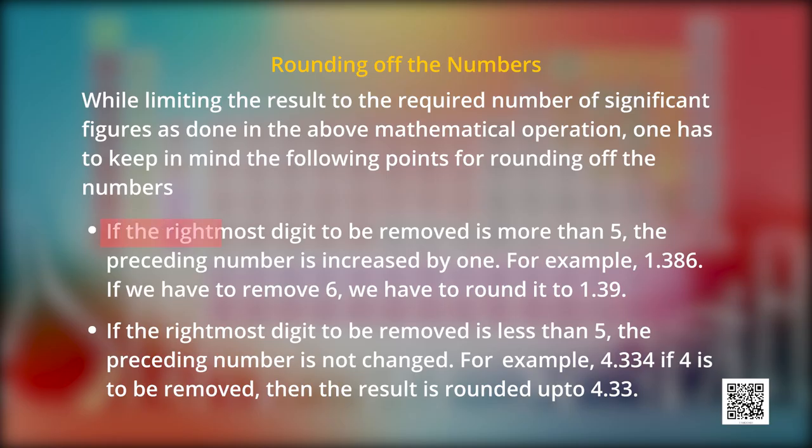Now, let us look the rule for rounding of the numbers. According to the first rule, if the rightmost digit is to be removed is more than 5, the preceding number is increased by 1. For example, 1.386, if we have to remove 6 we have to round it up to 1.39. The second rule: if the rightmost digit to be removed is less than 5, the preceding number is not changed. If 4 is to be removed, the result is rounded up to 4.33.